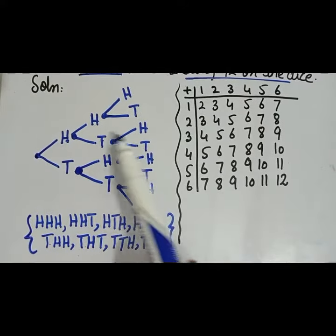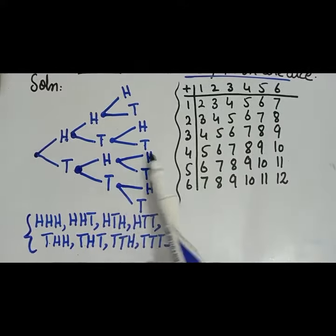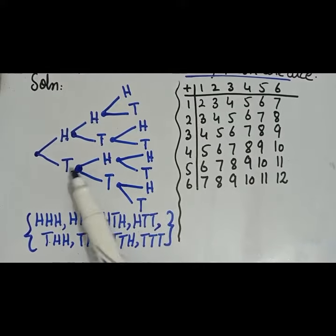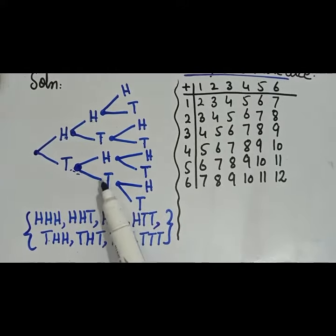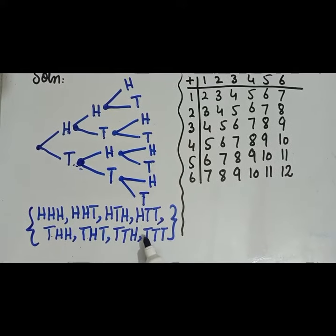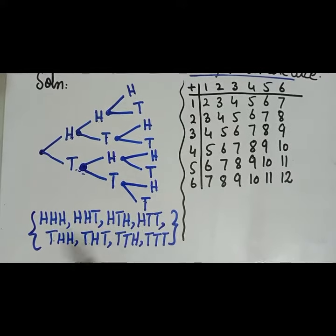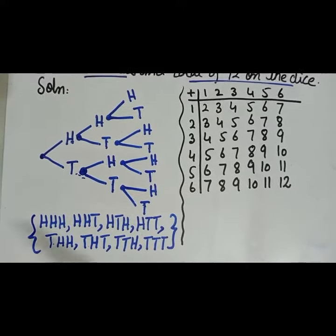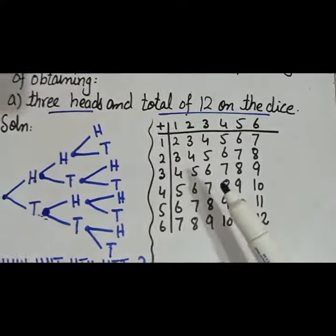...tail head head, tail head tail, tail tail head, and tail tail tail. There are eight total outcomes when we flip three coins at the same time. The next sample space is for the two dice.